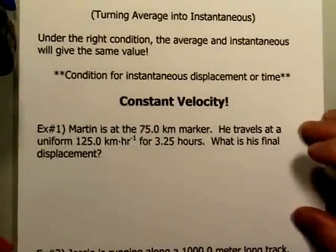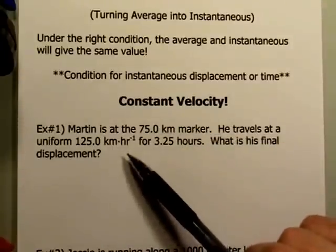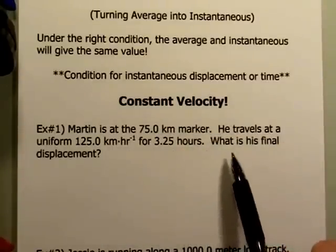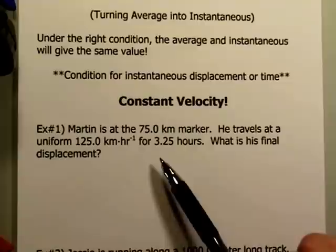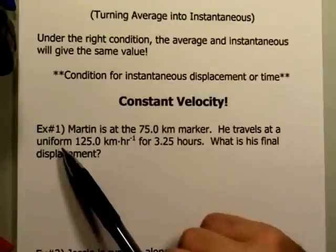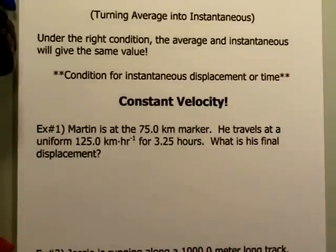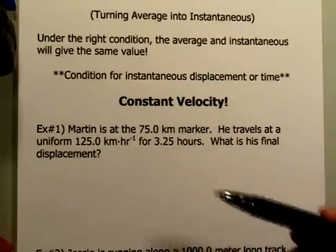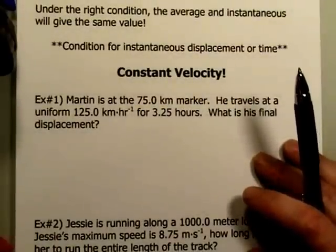Let's take a look at an example. Let's put a person at the 75 kilometer mark, and let him travel at a uniform 125 kilometers per hour for 3.25 hours. We want to know what is his final displacement. The key thing is this idea of uniformity of the velocity. When velocity is not changing, then the formula for average velocity is as good as the formula for instantaneous velocity.